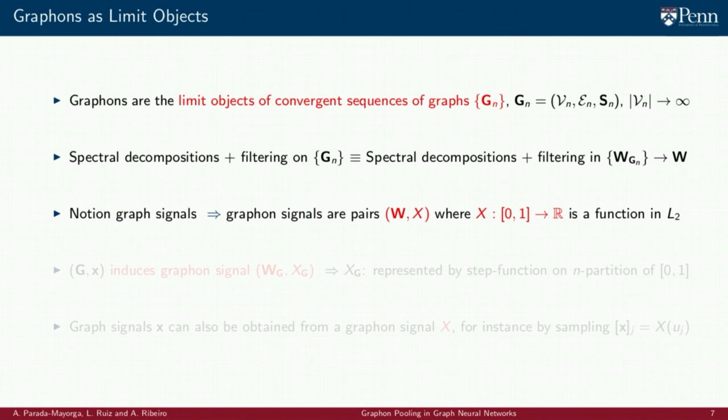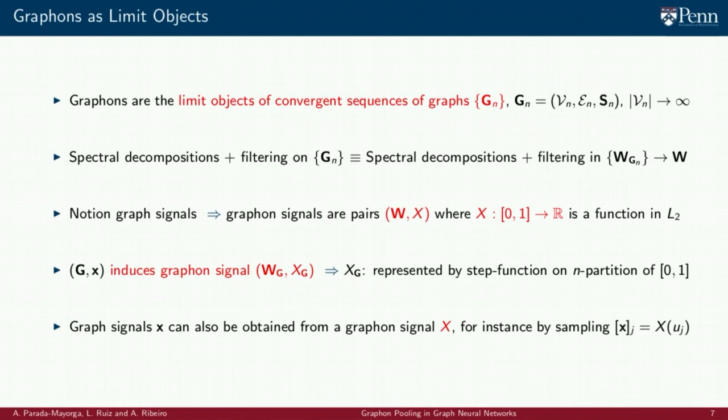The notion of graphon can then be associated to that of graphon signals, which are simply square integrable functions on the unit interval. In particular, we recall that any graph signal induces a graphon signal. This is, the graph induces a graphon and the graph signal induces a piecewise constant function whose support is on the interval. While graph signals can also be obtained from graphon signals, for instance, by using sampling.